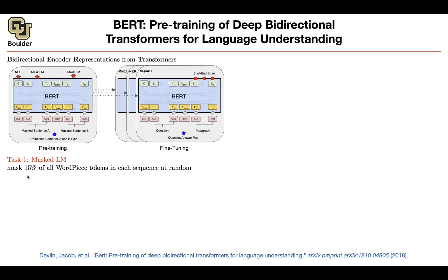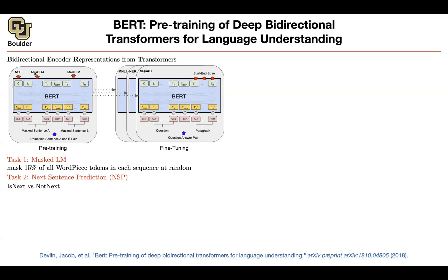There is another task. Some downstream tasks like question answering consist of pairs of sentences — you have a question and then a paragraph. So having a next sentence prediction task is going to help. You have two sentences: a masked sentence A and masked sentence B. If they follow each other, then sentence B is the next sentence for sentence A; otherwise, if sentence B is from a totally different corpus, it is not a next sentence. Your loss function is an addition of the NSP task plus the masked LM task.